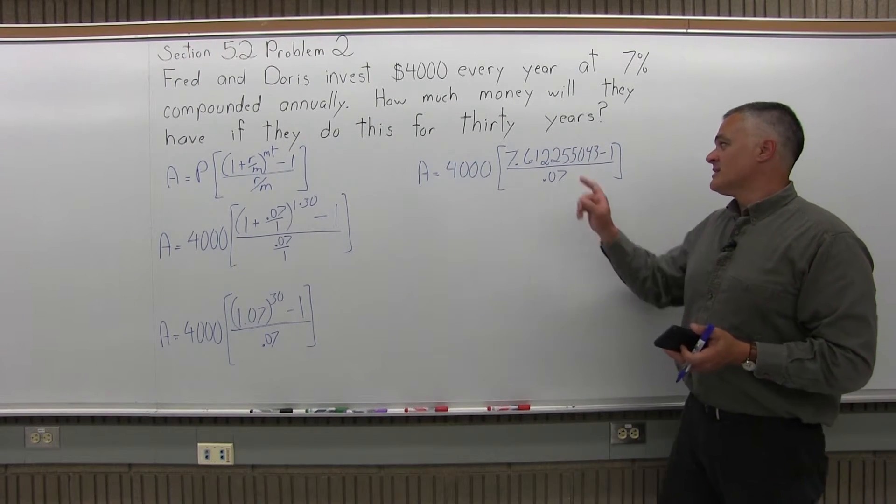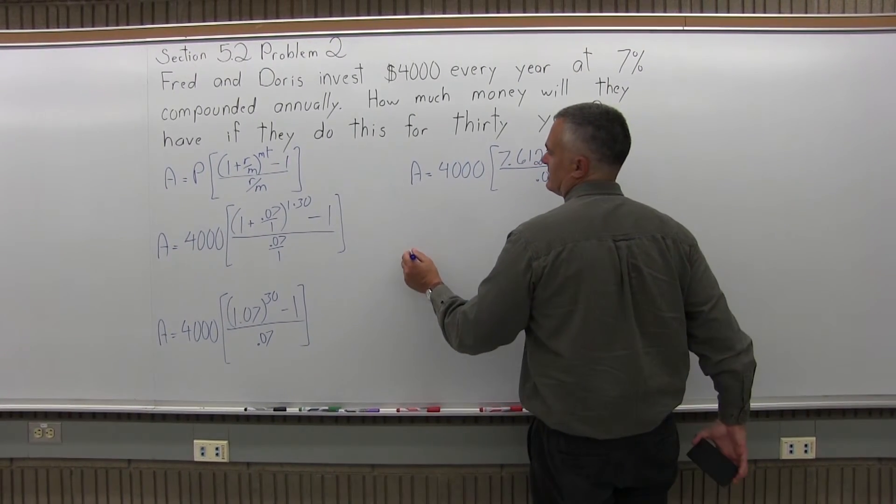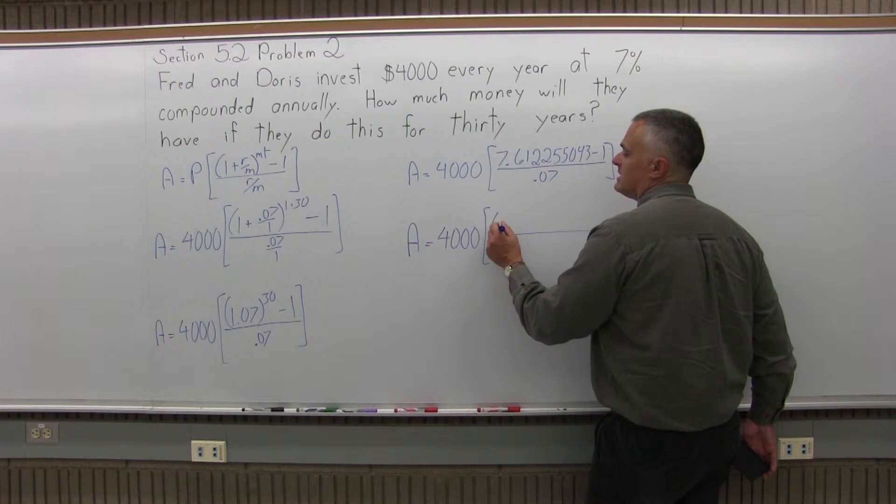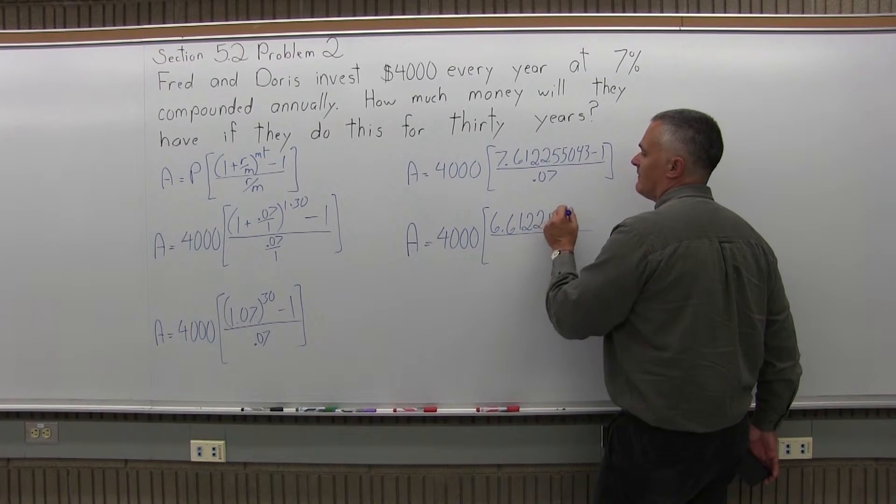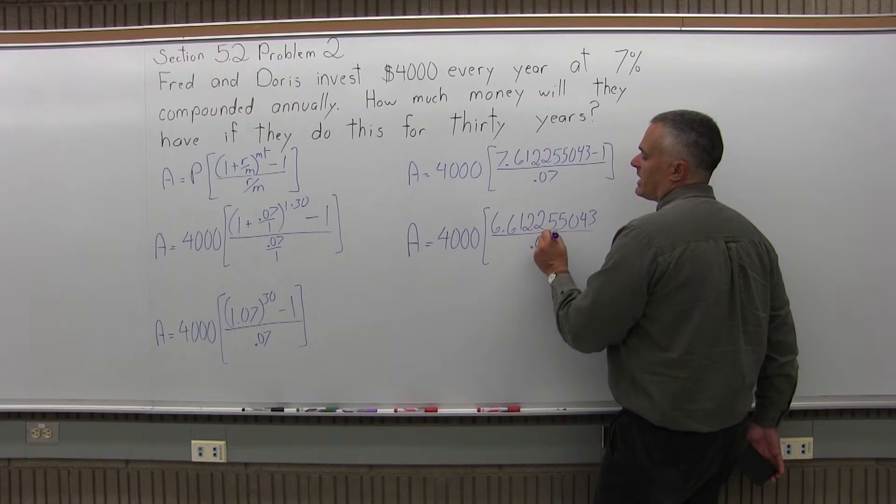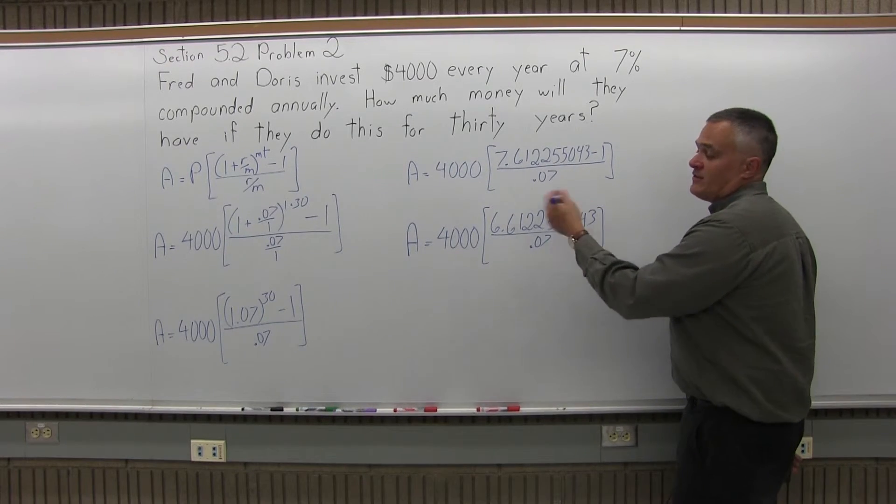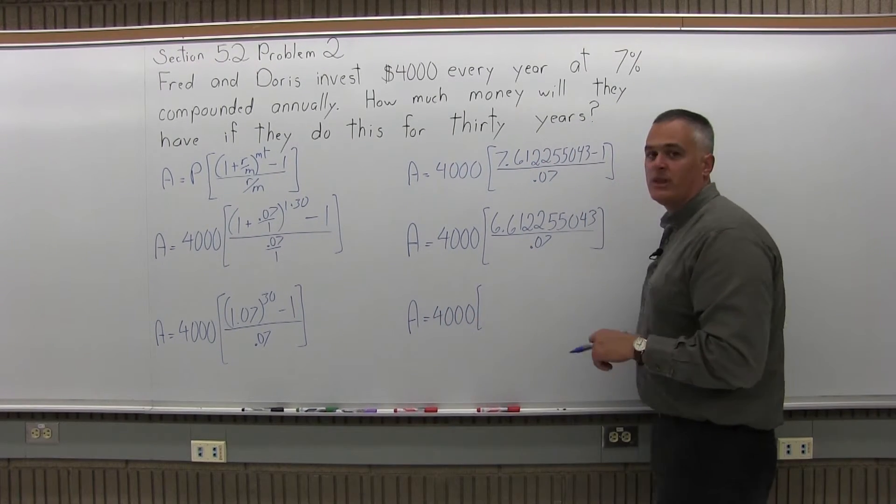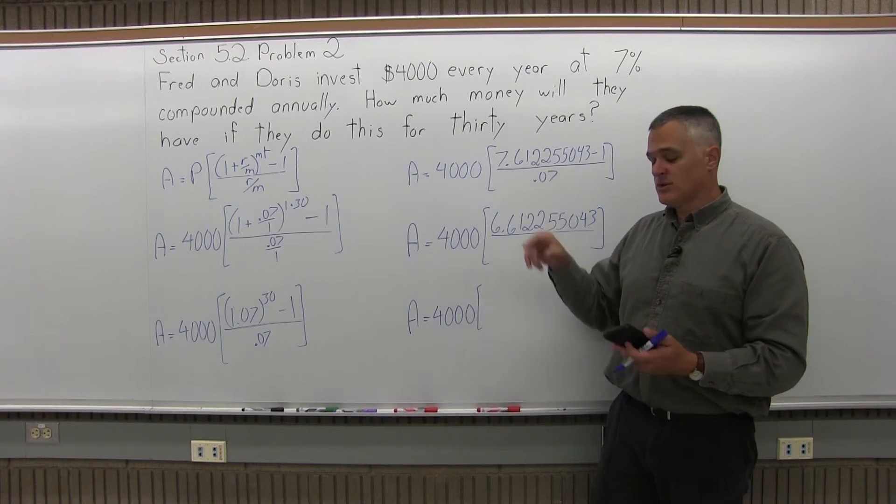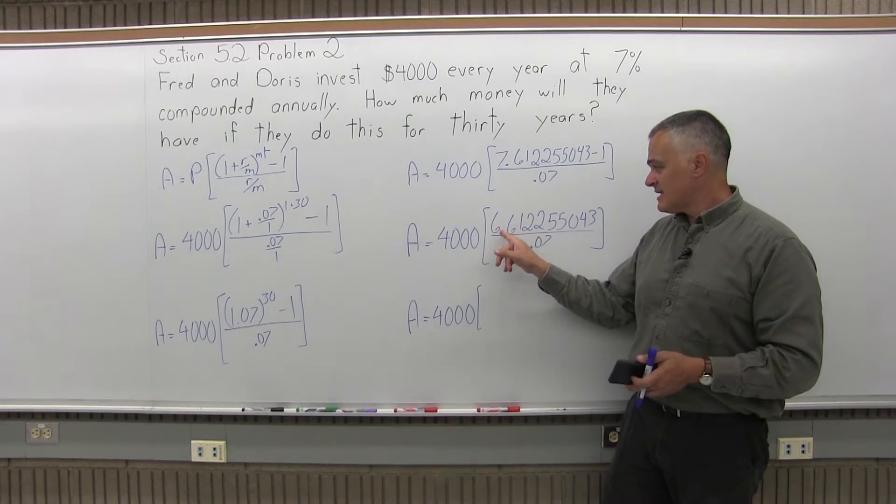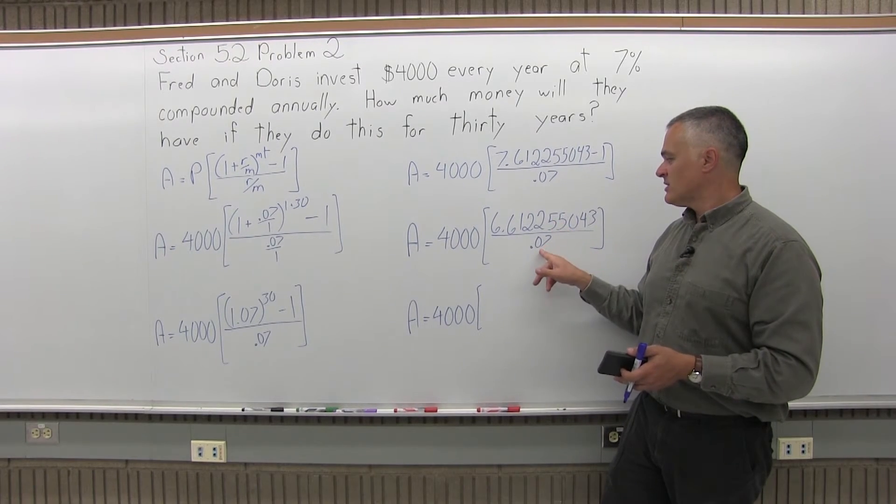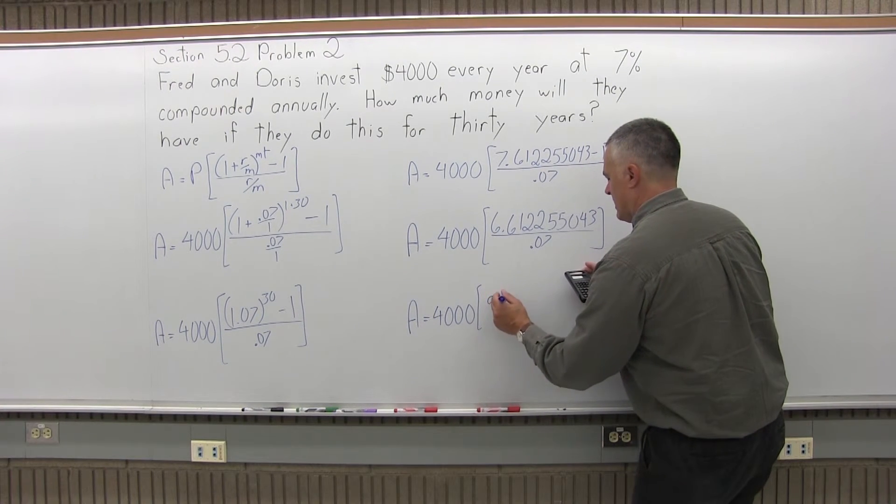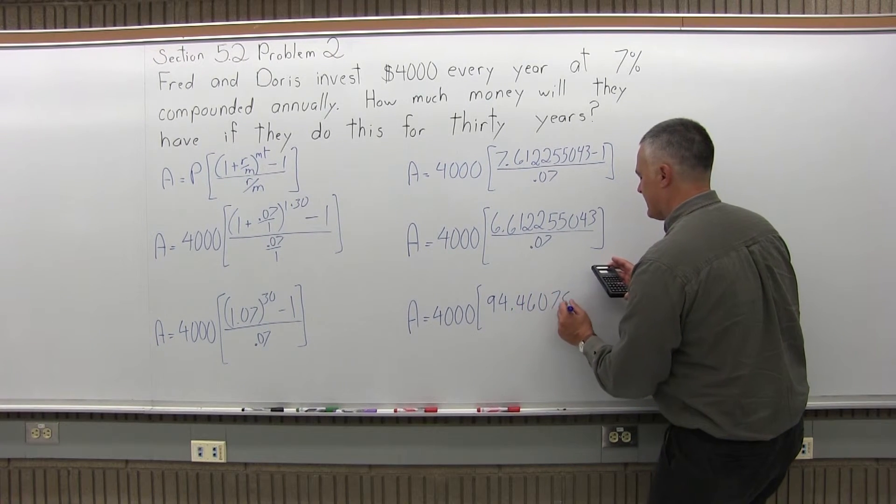Now, to continue with the brackets, in the numerator of the brackets is 7.6 something minus 1. So the minus 1 makes it 6.6 something. So, my problem now will say A equals 4,000 times 6.612255043. And in the denominator of the brackets I still have a .07. And that division also I really need to do with my calculator. So, at the next step I'll have 4,000 times and that will bring me down to one number in the bracket. So, my calculator still says 7.61225 something. So, let me do the minus 1. So, now on the screen I have the 6.612255043. Let me leave that on the screen. I'll divide by the .07. And that gives me a value in the brackets of 94.46078632.